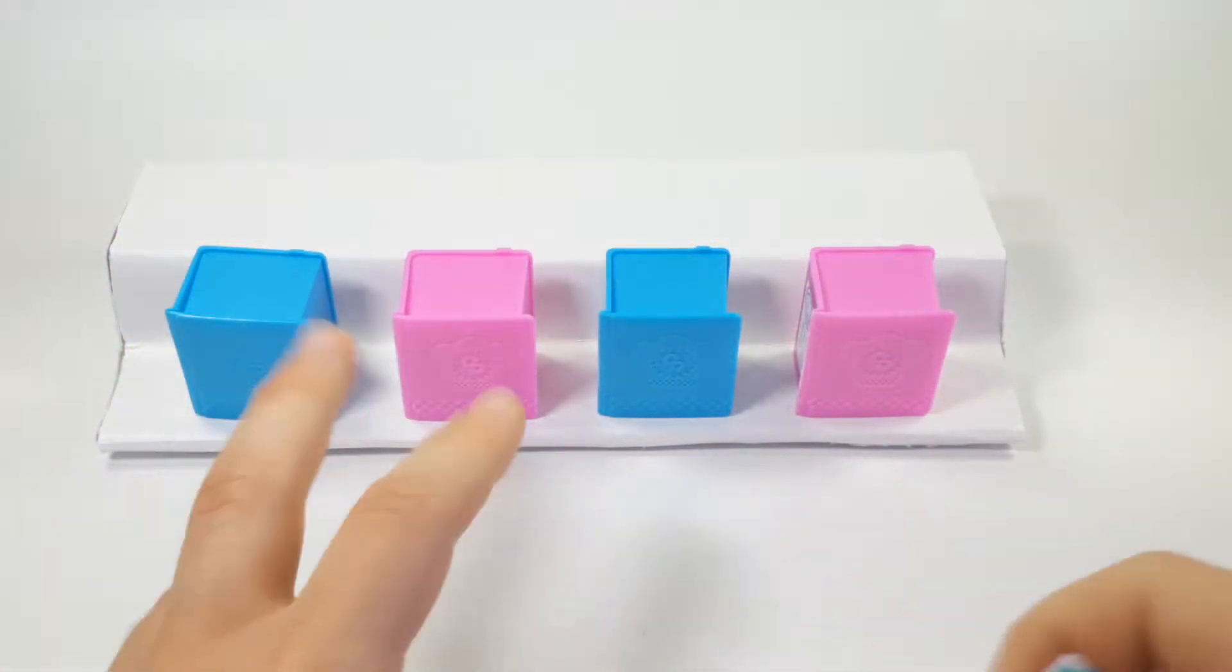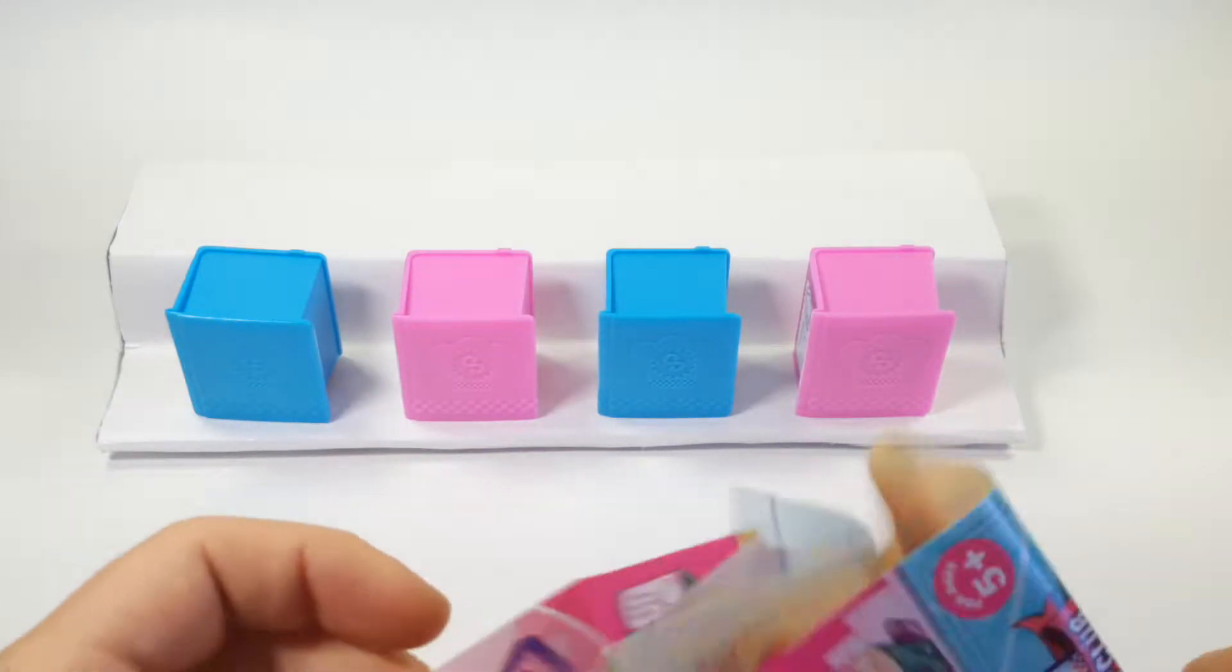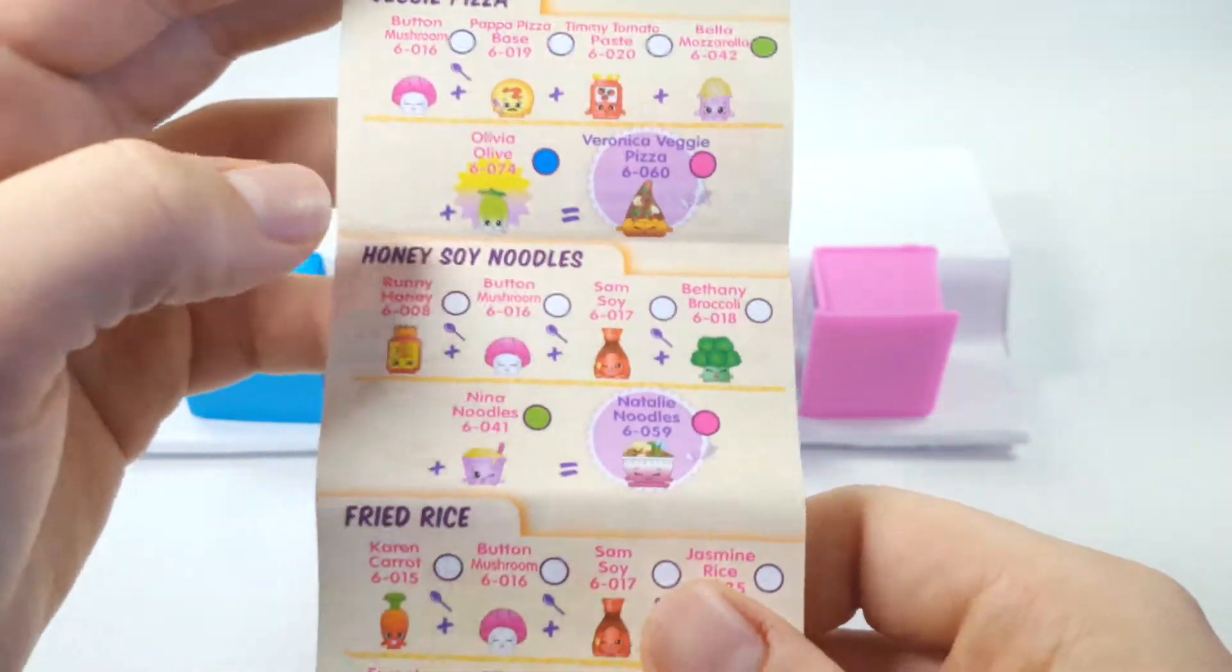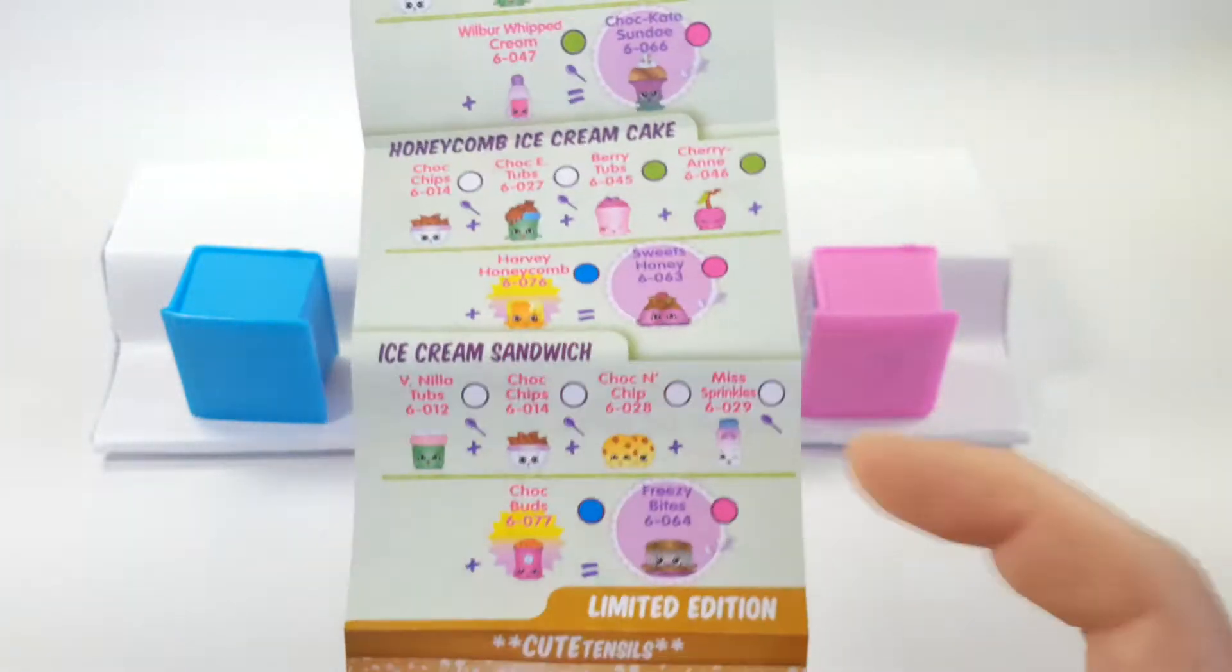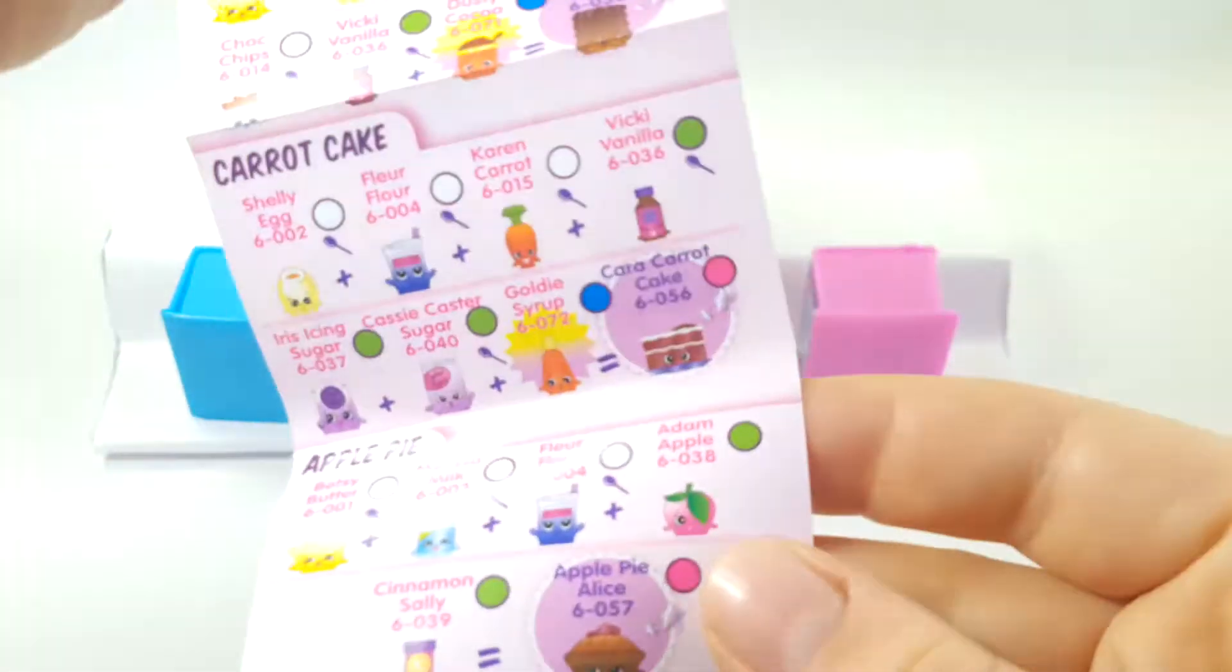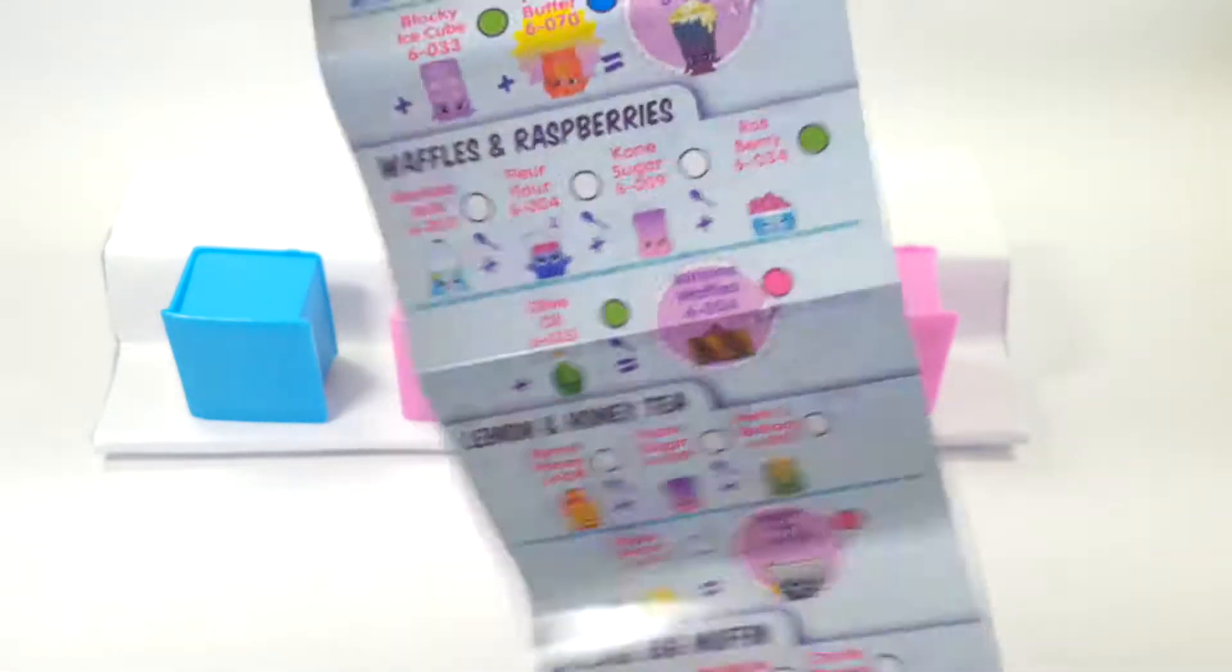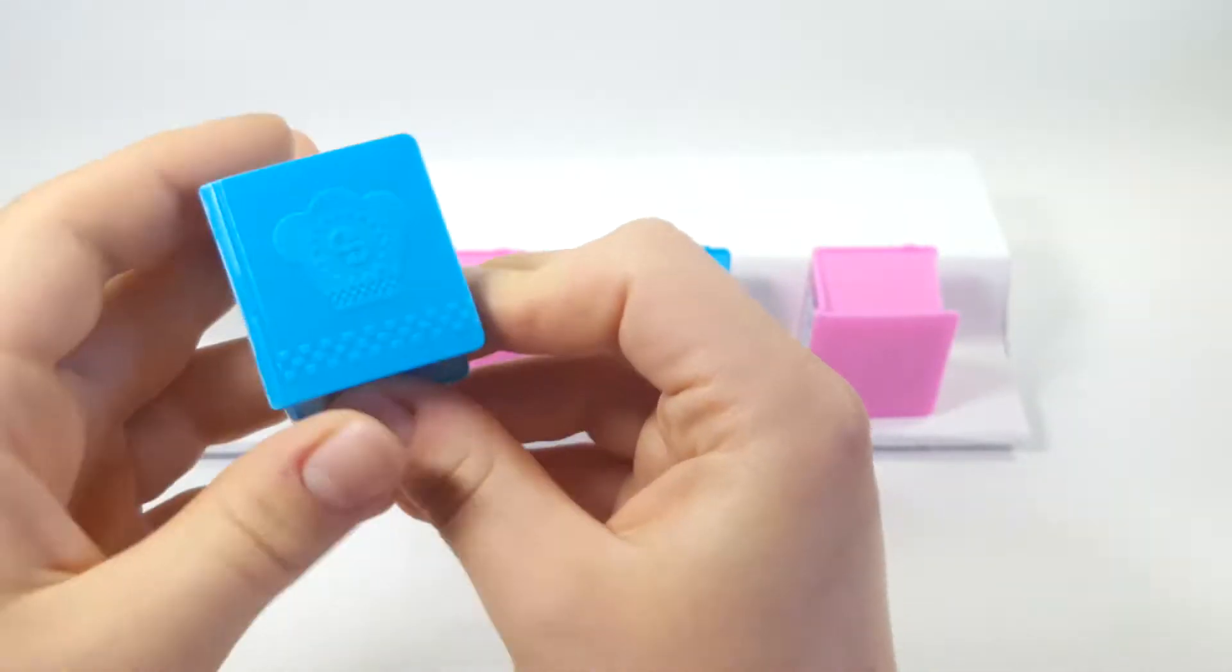So we actually got two of each color. I believe there's only two of each. There's blue, pink and blue and pink that we got and here is the collector's guide here. I'm going kind of fast but there's a lot. There's all of them. So we'll take a look at that and check it once we open these guys up. So let's open up the first blue one here.